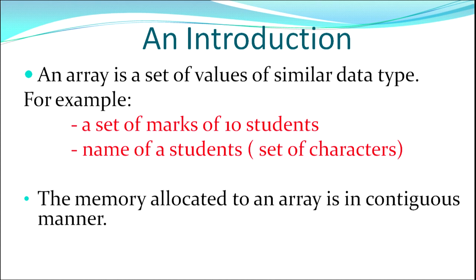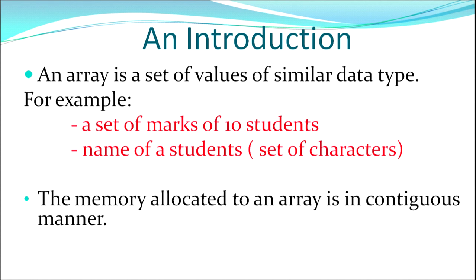An array is a set of values of similar data type. Say for example, you want to store marks of 10 students. Till now, whatever programming you have learned, you would have to create 10 variables to store 10 numbers. Instead of storing and maintaining 10 variables, we create an array where each data is of the same data type and we can specify the number of elements it should contain. You should always remember that when memory is allocated to an array, it is in a contiguous manner — stored in consecutive address locations.